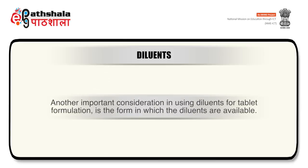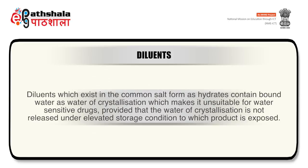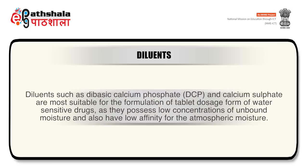Another important consideration in using diluents for tablet formulation is the form in which diluents are available. Diluents which exist in common salt forms as hydrates contain bound water as water of crystallization, making them unsuitable for water-sensitive drugs, provided that the water of crystallization is not released under elevated storage conditions. Diluents such as dibasic calcium phosphate and calcium sulphate are most suitable for the formulation of tablet dosage forms of water-sensitive drugs, as they possess low concentrations of unbound moisture and also have low affinity for atmospheric moisture.